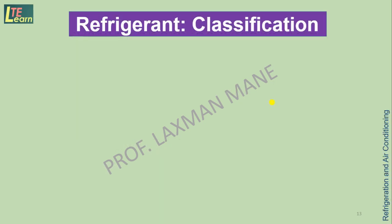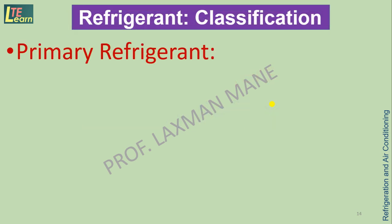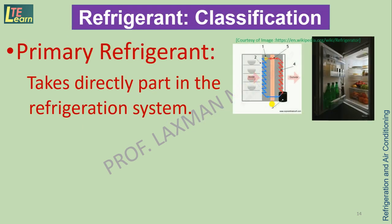Refrigerants are classified into mainly two broad categories: primary refrigerants and secondary refrigerants. Primary refrigerant takes direct part in the refrigeration system. For example, in the refrigerator, food kept inside is cooled by the air inside the fridge. Air is in contact with the freezer, so the refrigerant in the cooling coil of the freezer is absorbing heat from the air.